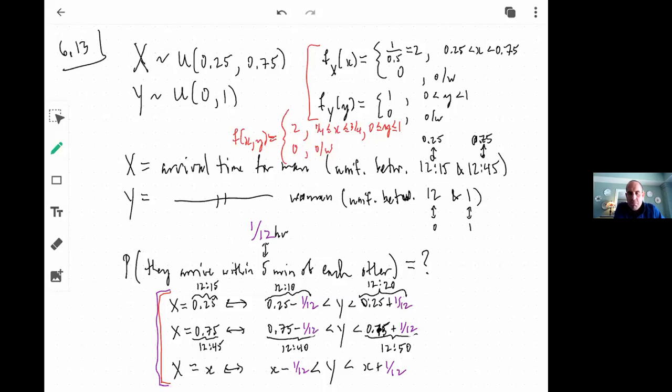Similarly, what if the man arrives at the extreme later end of his window? Well, that would be at the three quarters, which is at 12:45. And that would mean that Y would have to arrive sometime between 12:40 and 12:50, which are all valid options. So no matter how extreme X is, Y can always go down by five or up by five minutes from that. And all of those are valid for Y. So that's kind of the key. So again, in this case where X is equal to three quarters, that means Y would have to arrive no sooner than three quarters minus a twelfth of an hour and three quarters plus a twelfth of an hour. And the general case is this one right here.